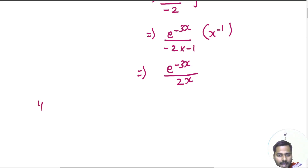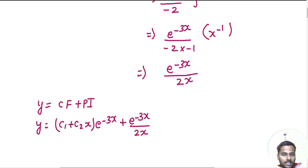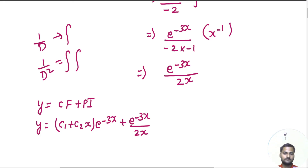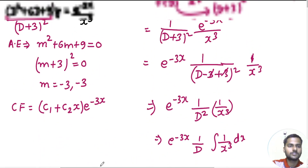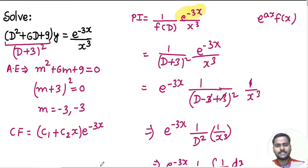The final solution is y equals CF plus PI. So your CF was (c1 + c2·x)·e^(minus 3x) and your PI is e^(minus 3x) over 2x. Remember that 1 over D is the same as integrating once, and 1 over D squared is twice integration with respect to x. So this was the complete solution for this problem. We will see you with more questions — check our playlist named Ordinary Differential Equation, either in the playlist section or on the website. Thanks again.